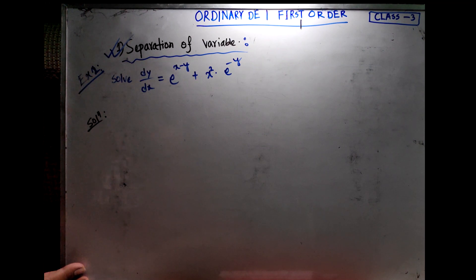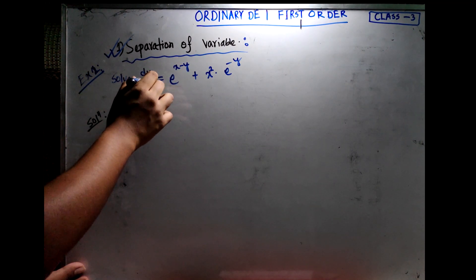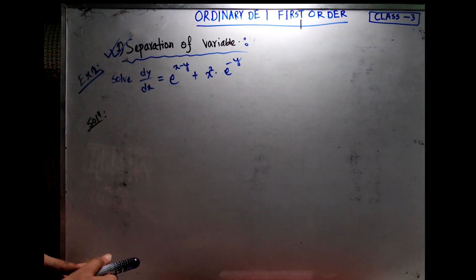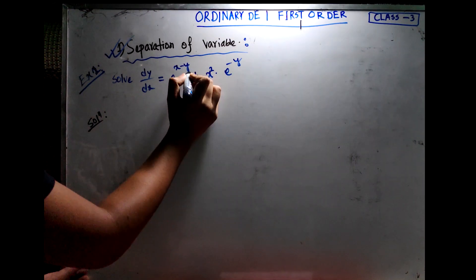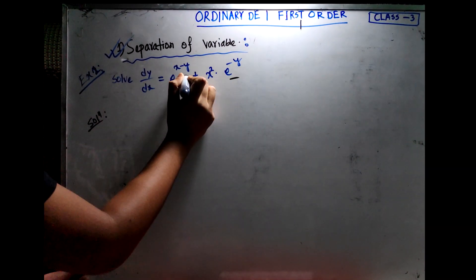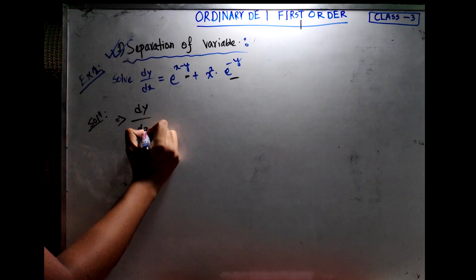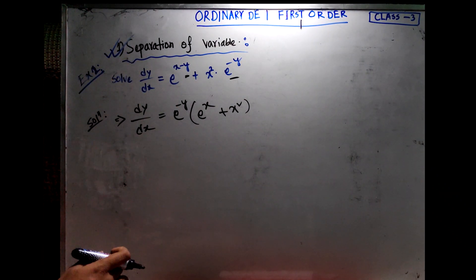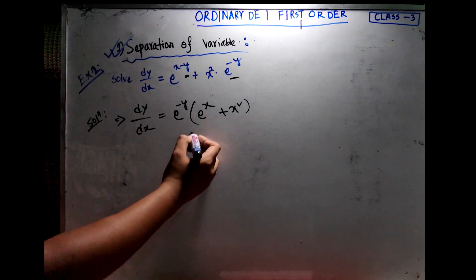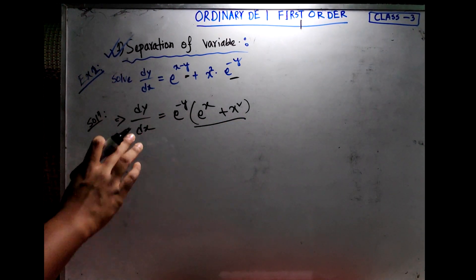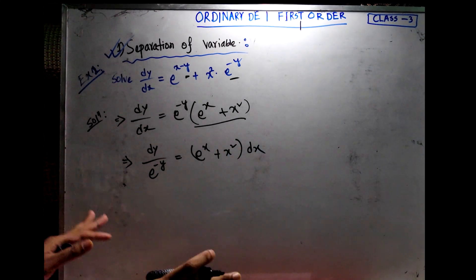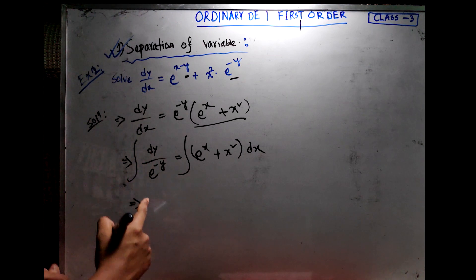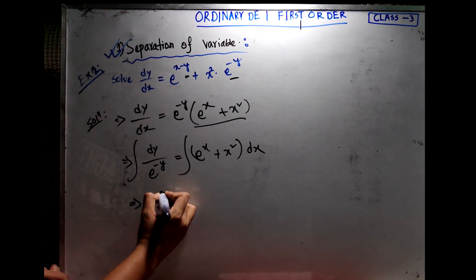Example 2: Solve dy/dx = e^(x−y) + x²·e^(−y). We take e^(−y) common, giving e^y dy = (e^x + x²) dx. We then integrate both sides: ∫e^y dy = ∫(e^x + x²) dx, yielding e^y = e^x + x³/3 + c.